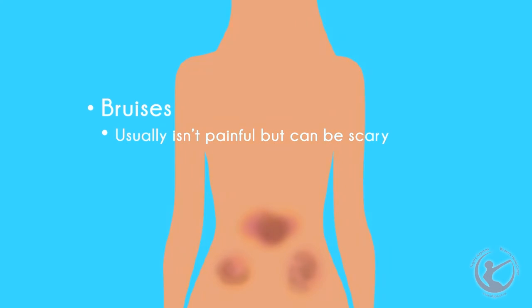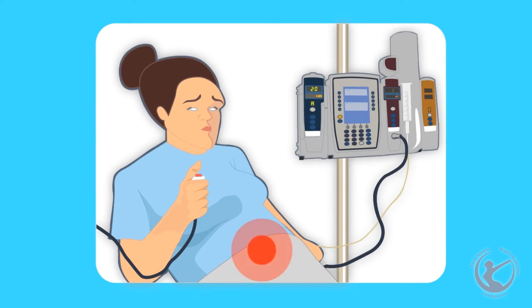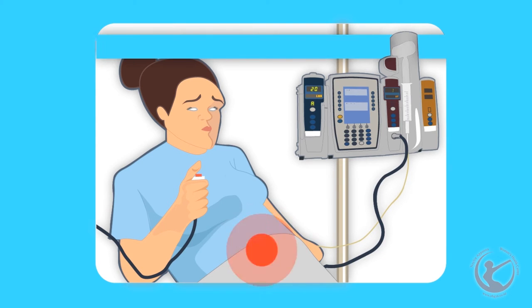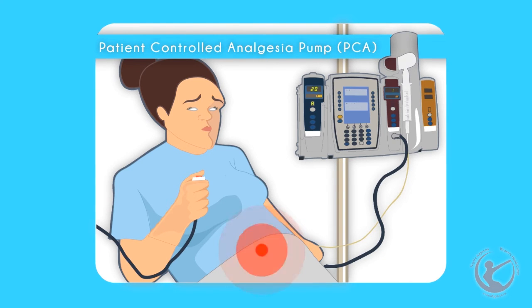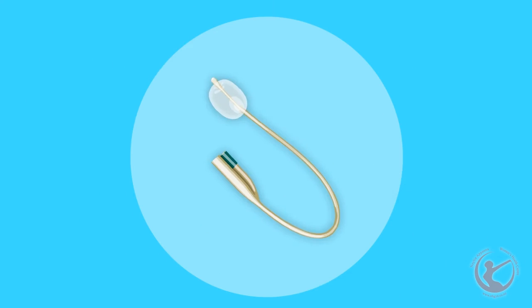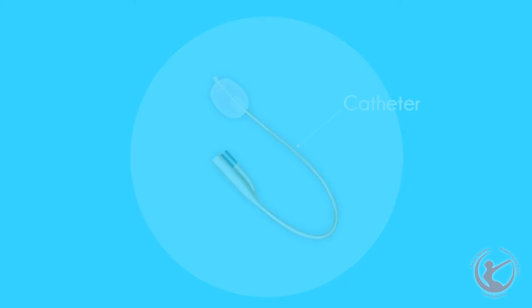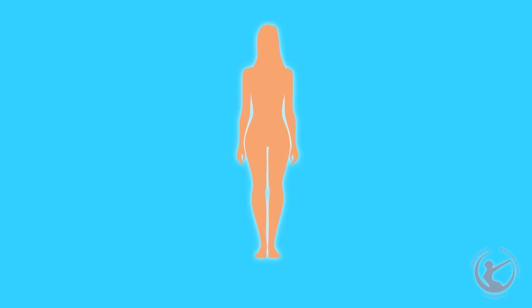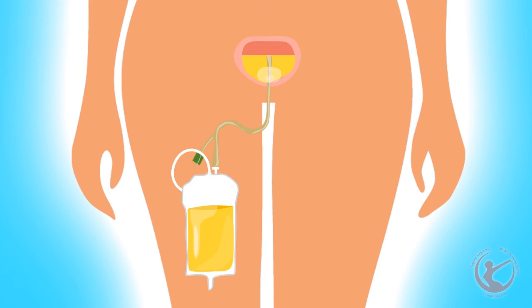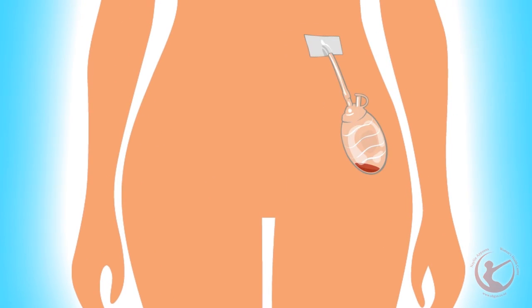Small blood vessels in the abdomen occasionally burst when the skin is distended. Usually this isn't painful, but can be quite scary. If I expect you to have significant pain, you will have a patient-controlled analgesia pump inserted, called a PCA, during which you will be able to self-administer pain relief when it's needed. You will be shown how to do this. Very rarely, you may have a catheter left in your bladder. This happens if the bladder is manipulated a fair bit during the operation, and is usually left in for about 24 hours. You may have a tube sticking out of your tummy for drainage. This is left in if there is more than the average bleeding at the operation, merely as a precautionary measure.